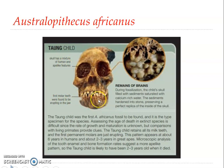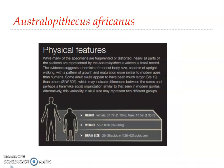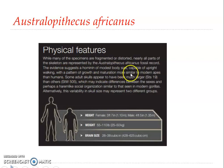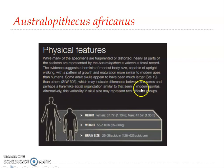Regarding the physical features of Australopithecus africanus, many specimens are fragmented and distorted, but nearly all parts of the skeleton are represented. It shows modest body size and capability of upright walking, with a pattern of growth and maturation more similar to modern apes than humans. Some adult skulls appear to have been much larger, which may indicate sexual dimorphism or a harem-like social organization similar to modern gorillas, or may represent two different groups.